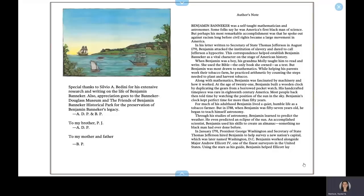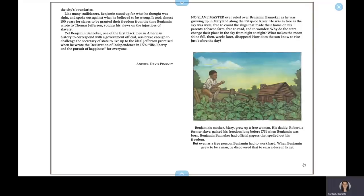In January 1791, President George Washington and Secretary of State Thomas Jefferson hired Benjamin to help survey a new nation's capital, which was later named Washington, D.C. Benjamin worked alongside Major Andrew Ellicott, one of the finest surveyors in the United States. Using the stars as his guide, Benjamin helped Ellicott lay the city's boundaries.